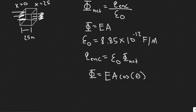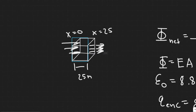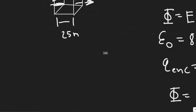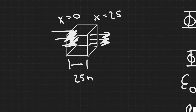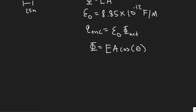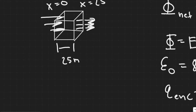The net flux means adding up all the fluxes from entering and leaving — basically adding the flux through each side of this cube. E is the electric field, A is the surface area of the face the field passes through. For this cube it's 25 by 25. Theta is the angle between the electric field direction and the outward normal (perpendicular) to the surface area.